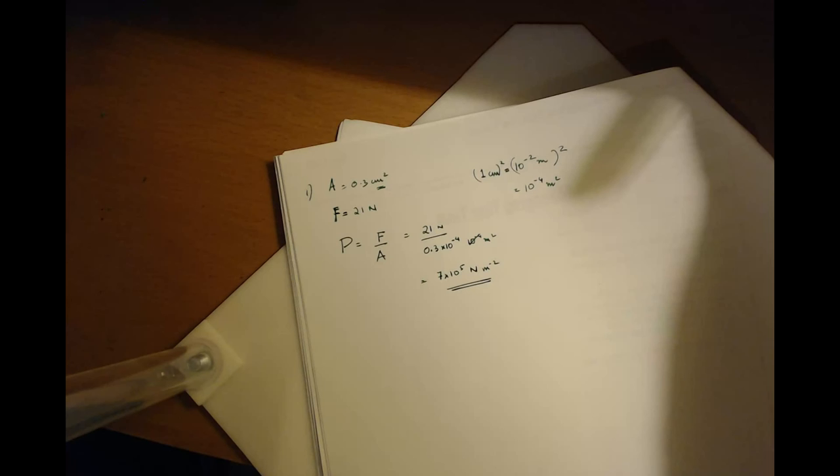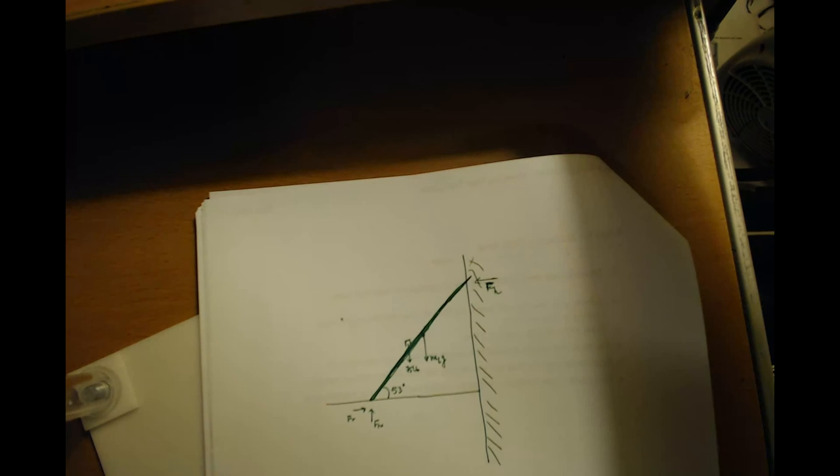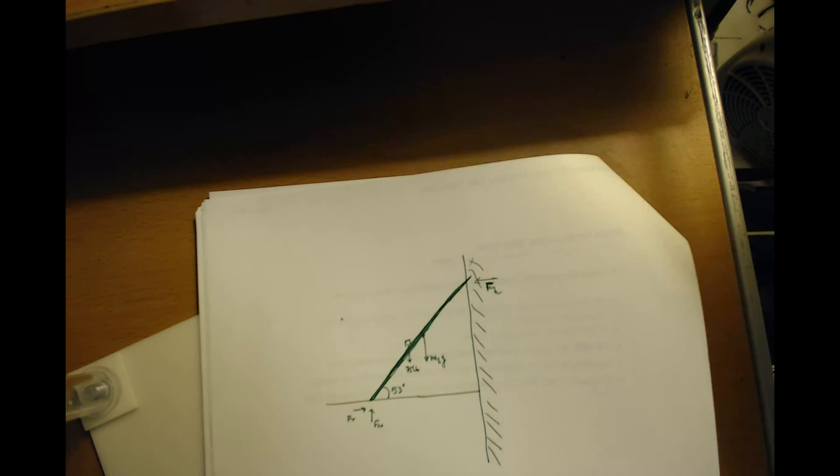Question 2 from a set of questions that you had sent me. A uniform ladder, 15 feet long, is leaning against a frictionless wall at an angle of 53 degrees above the horizontal. The weight of the ladder is 30 pounds. A 75-pound boy climbs 6 feet up the ladder. What is the magnitude of the frictional force exerted on the ladder by the floor?